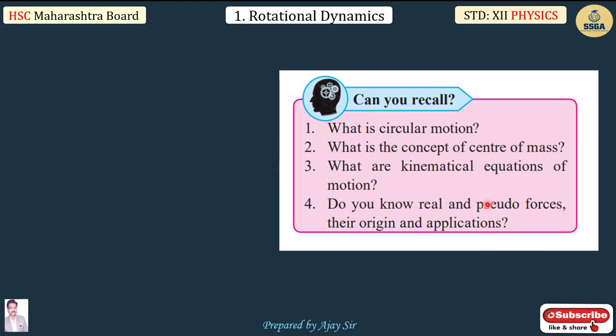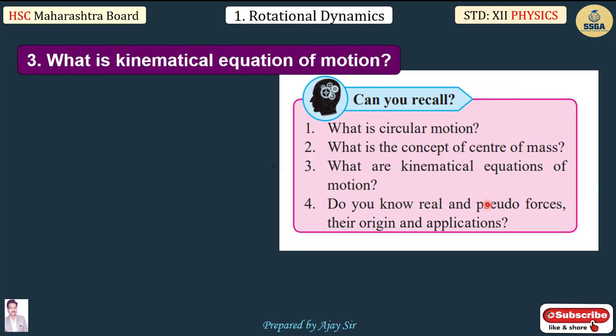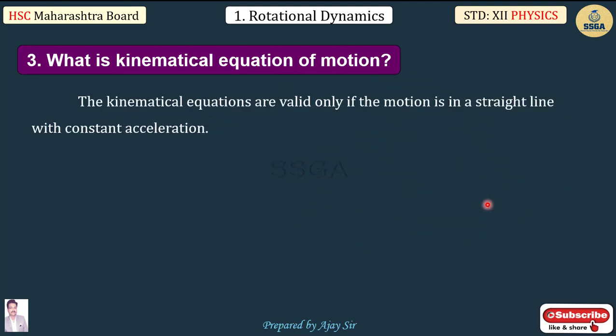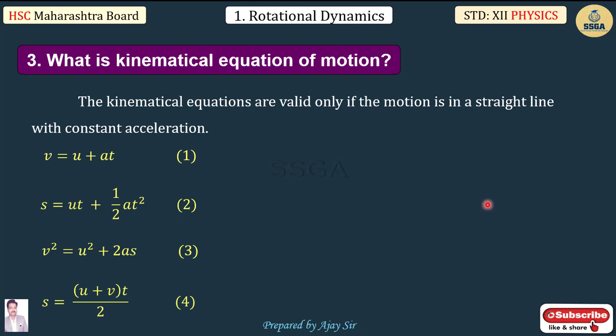Third recall question: what are the kinematical equations of motion? These equations are valid for straight-line motion with constant acceleration. The equations are: v = u + at, s = ut + ½at², v² = u² + 2as, and s = (u + v)t/2. These are valid for linear motion only.